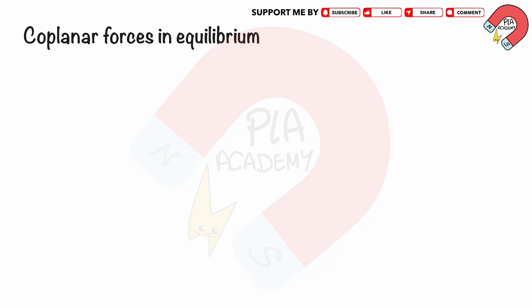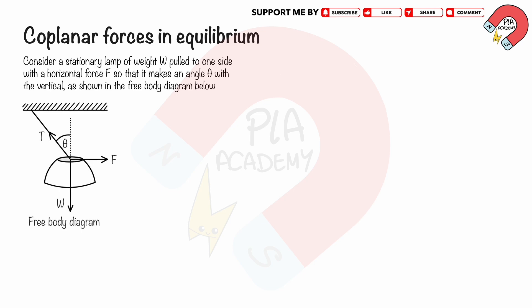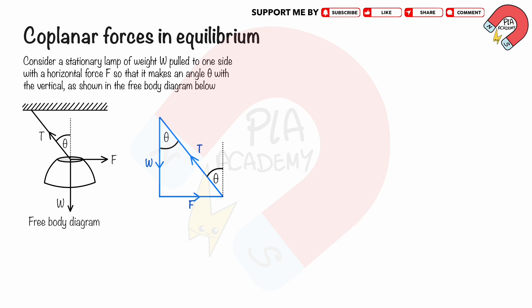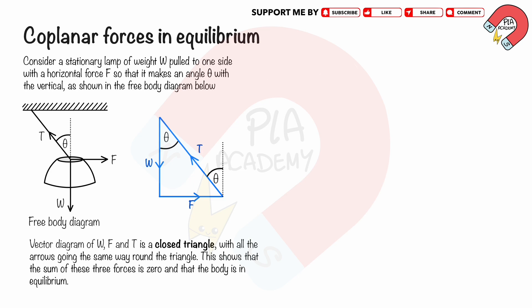Coplanar forces in equilibrium: Consider a stationary lamp of weight W pulled to one side with a horizontal force F, so that it makes an angle theta with the vertical. To analyze the forces, we construct a vector diagram. Draw the weight vector W, then the force vector F connecting the tail of F to the head of W, then the tension vector T connecting the tail of T to the head of F. The vector diagram of W, F, and T forms a closed triangle with all arrows going the same way round, showing the sum of the three forces is zero and the body is in equilibrium.